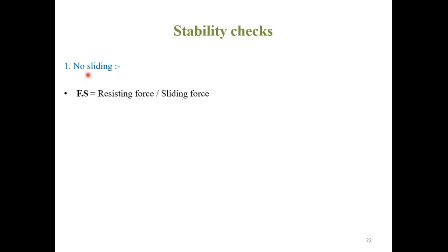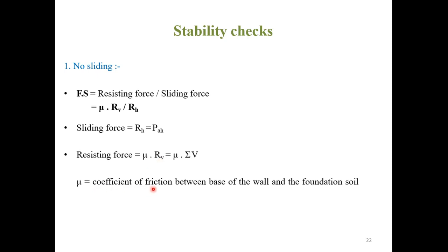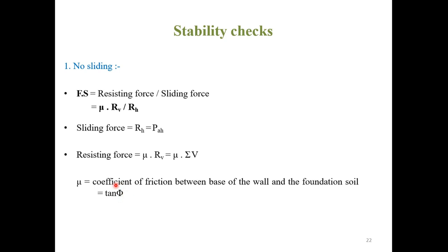First stability check — no sliding: The factor of safety for no sliding is the resisting force divided by the sliding force: FOS = μ × R_V / R_H. The sliding force is the horizontal force R_H, and the resisting force is μ × R_V, where μ is the coefficient of friction between the base of the wall and the foundation soil, equal to tan φ, and φ is the internal friction angle of the soil.